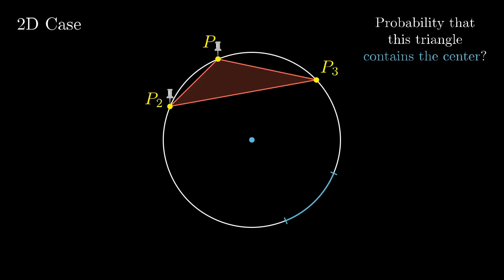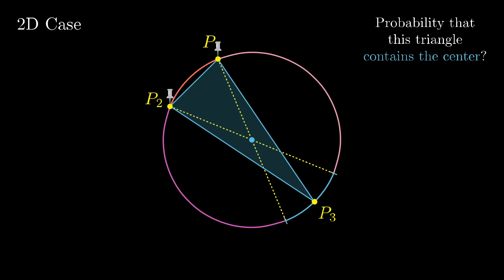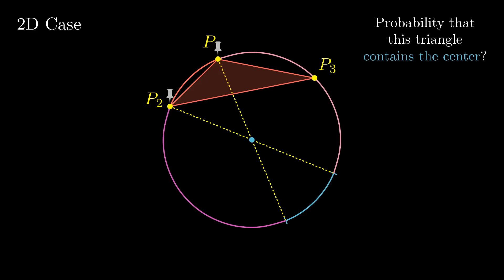Specifically, if you draw lines from p1 and p2 through the center, these lines divide up the circle into four different arcs, and if p3 happens to be in the one on the opposite side as p1 and p2, the triangle has the center. If it's in any of the other arcs, though, no luck.